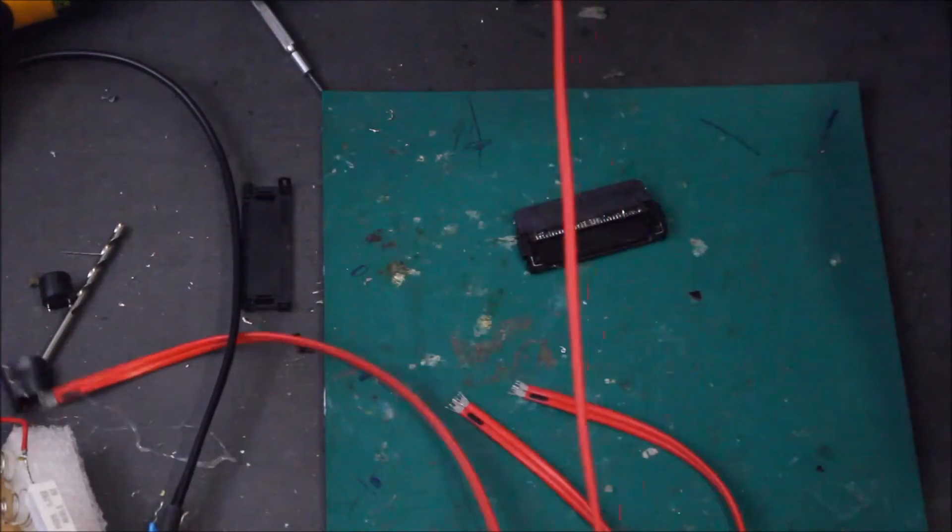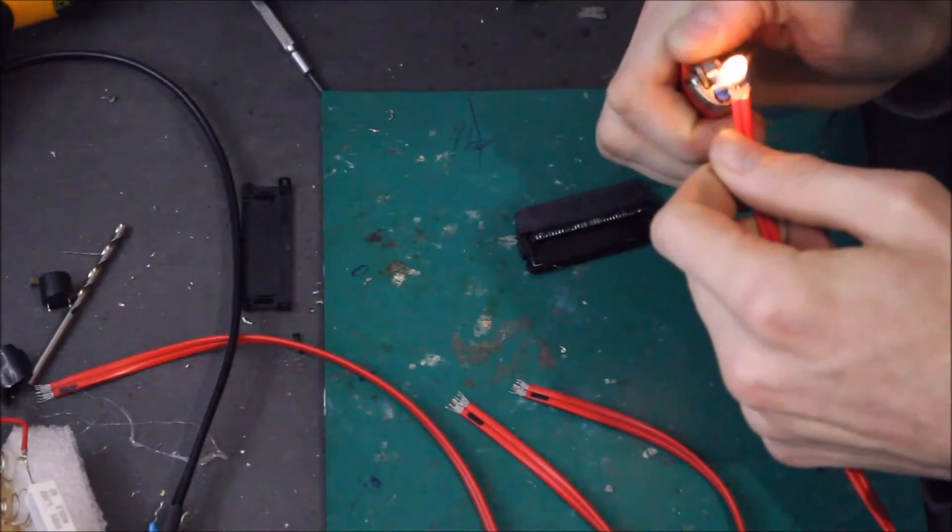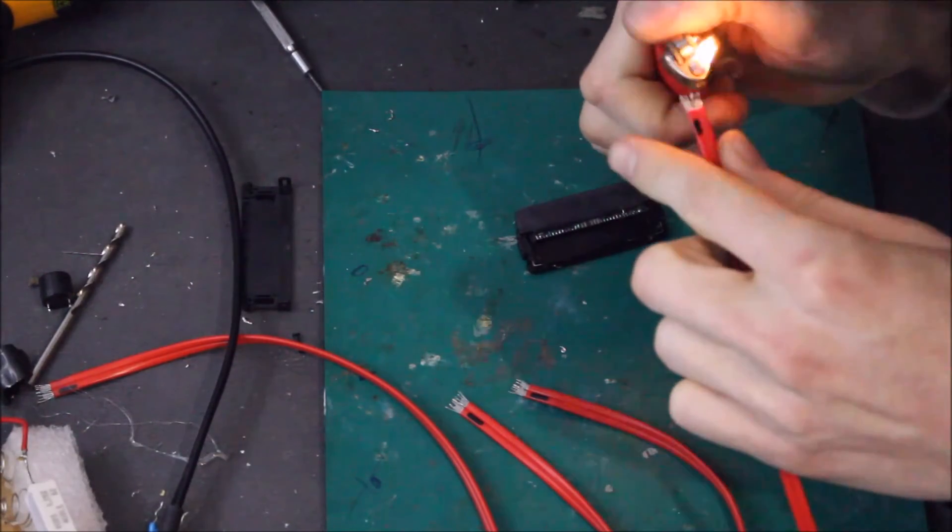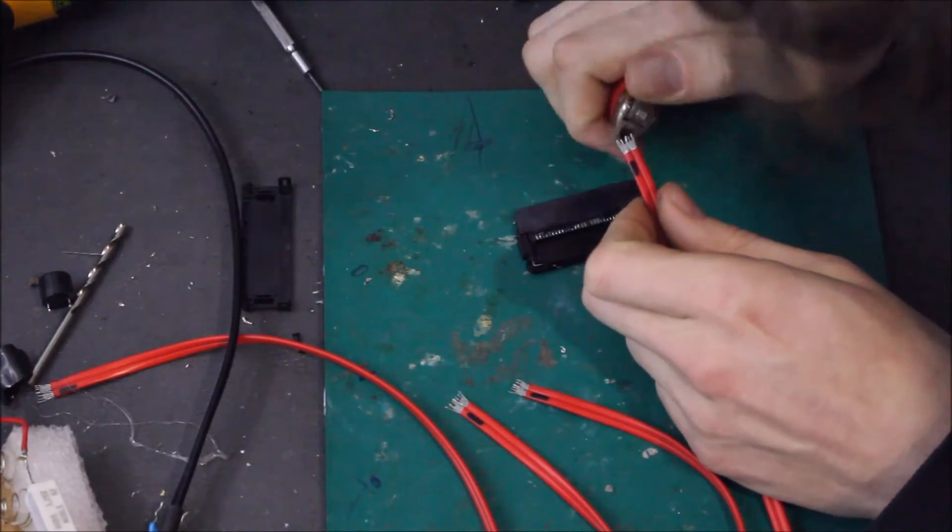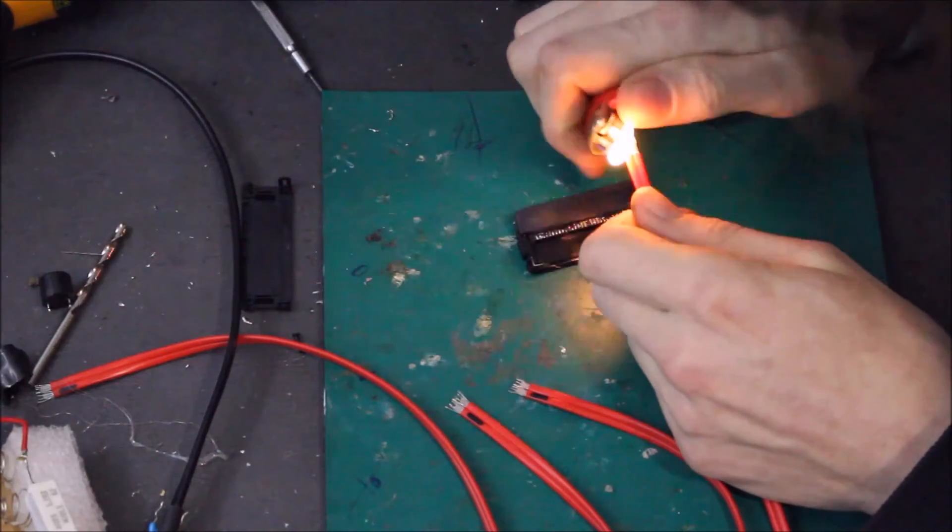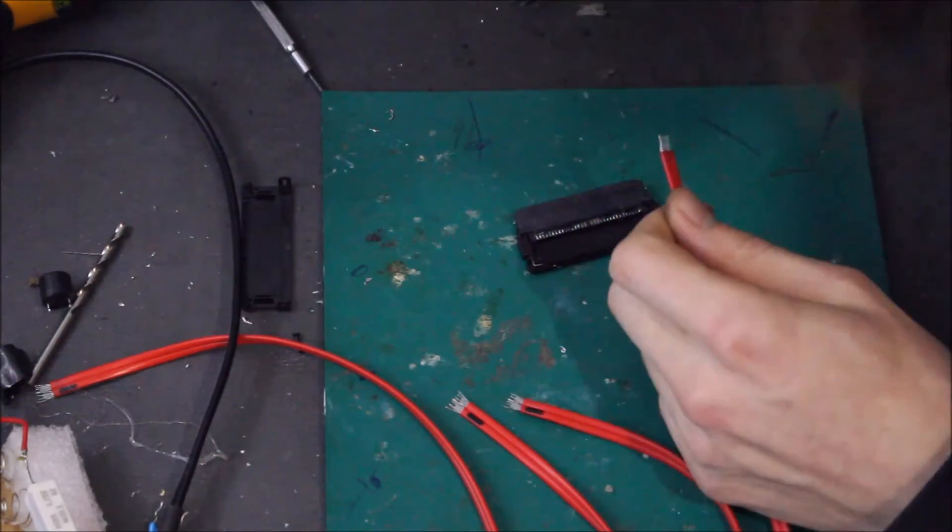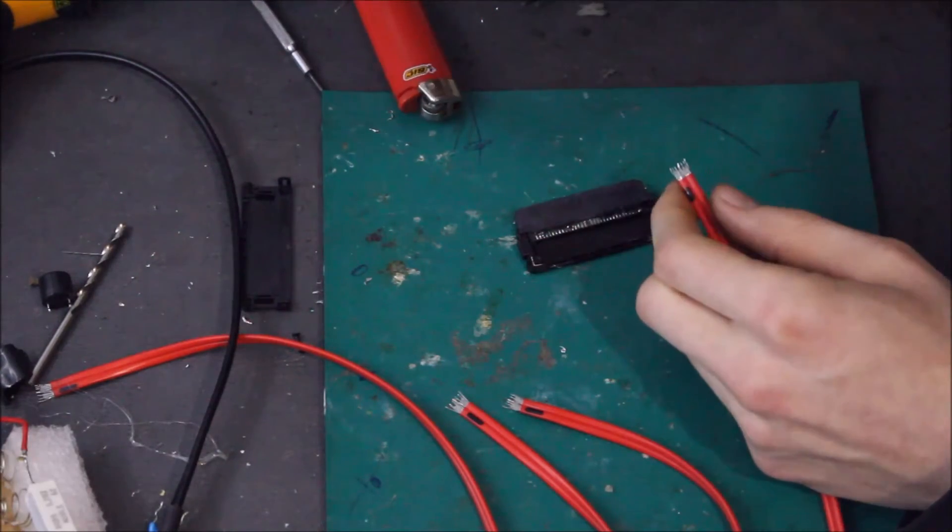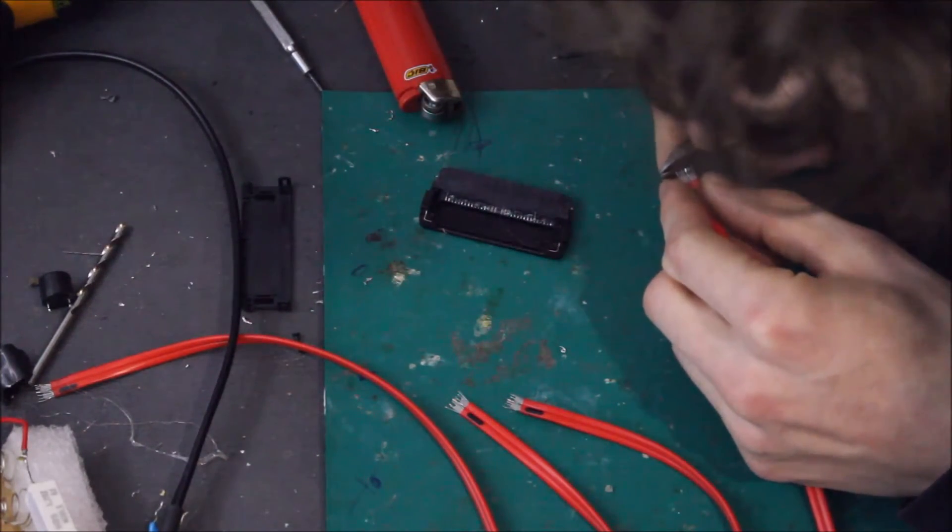So we're going to go through, find number one, which is the last one I just pulled off. We're going to heat up the hot glue again, get more hot glue off. The hot glue, you don't need it hot hot, you just need enough to get the hot glue off.